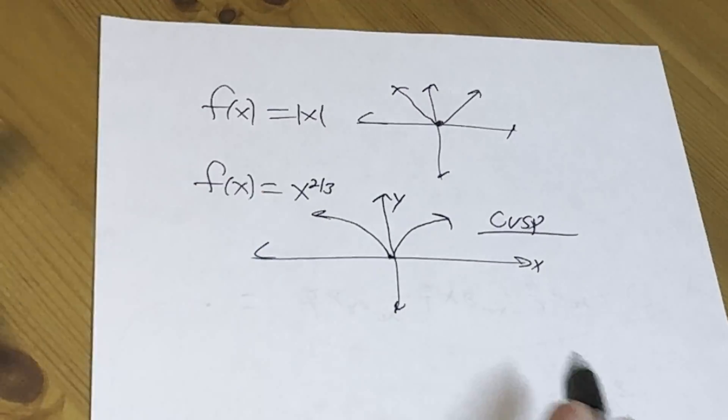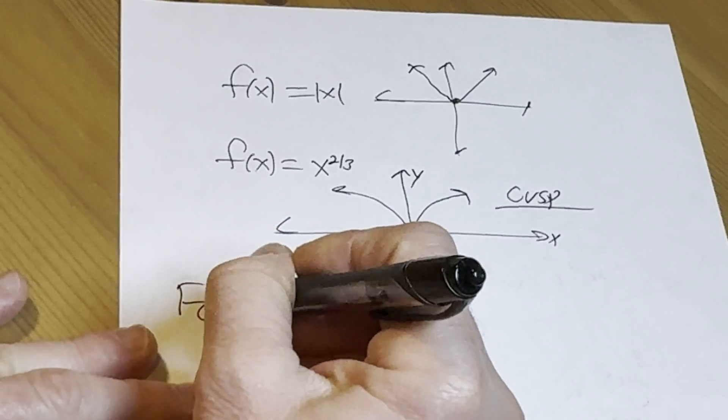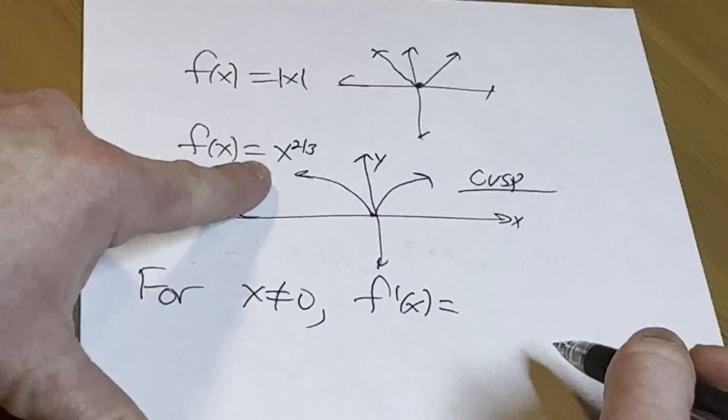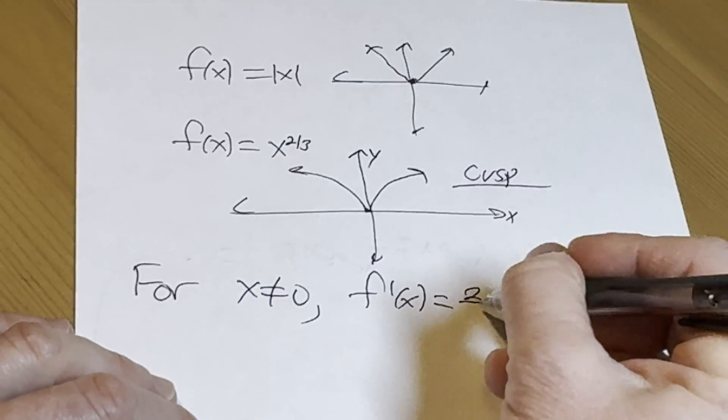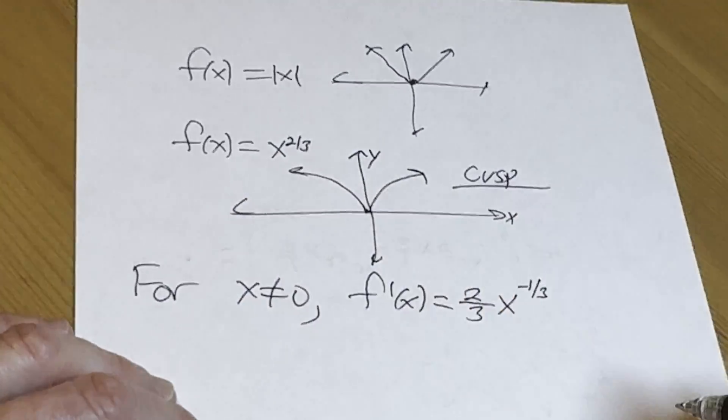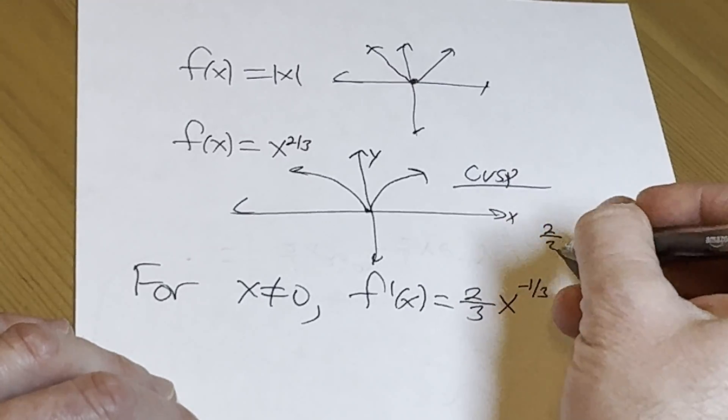You could take the derivative, right? For x not equal to zero, f prime of x, well, you can use the power rule, right? You bring down the two thirds, and then you subtract one from the exponent, so you get negative one third, right?